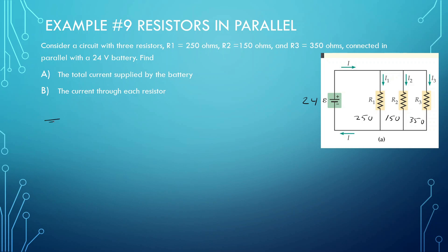We have 24 volts and we'll find the resistance total. Since this is in parallel, 1 over R total equals 1 over R1 plus 1 over R2 plus 1 over R3, which is 1/250 plus 1/150 plus 1/350. Finding the inverse of that gives us 73.94 ohms as the total resistance.